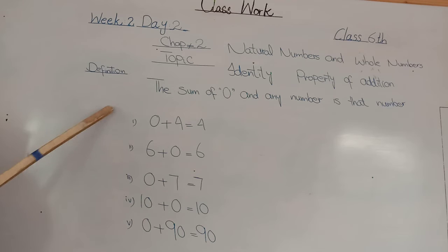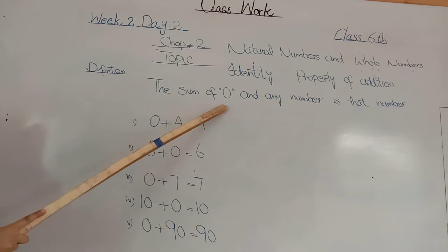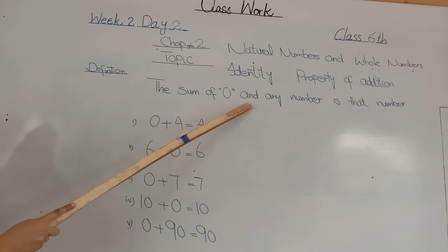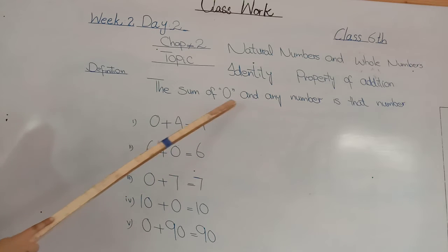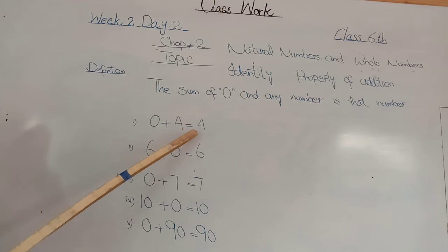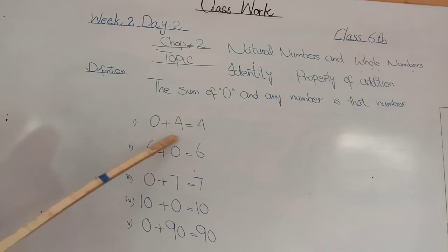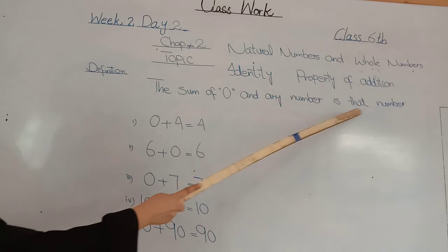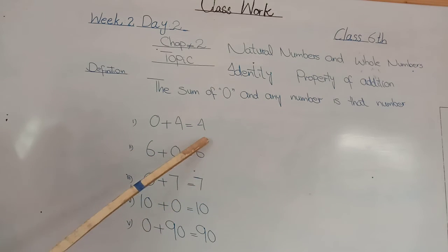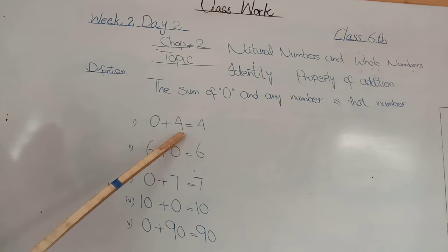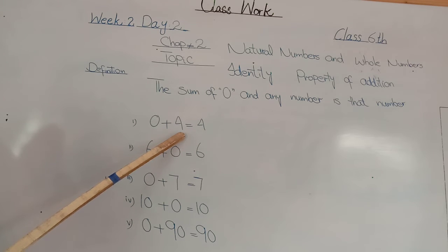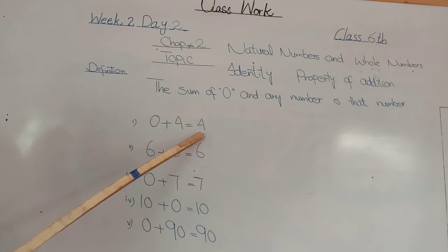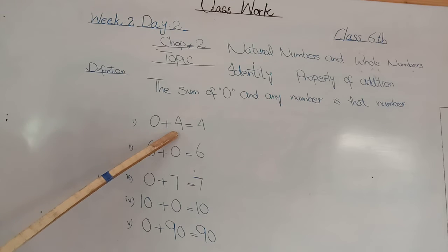Coming back to your concept: the sum of 0 and any number is that number. Kisi bhi number aur 0 ka sum jo hai, wahi number hota hai. Agar hum kisi bhi number mein 0 ko add kerti hain, toh jo sum aata hai, woh actually wahi number hota hai jis mein hamne 0 ko add kia hai.